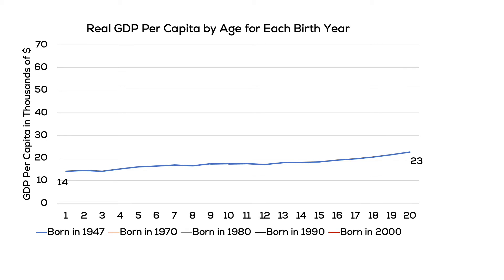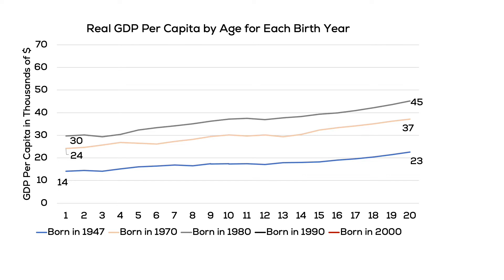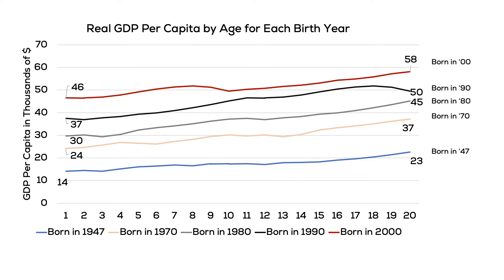Real GDP per capita increased to $23,000 by the time they turned 20. The 1970 generation started at $24,000 and ended at $37,000. The 1980 and 1990 generations had higher living standards across their first 20 years of life than the generations before them. Those born in 2000 started their life with real GDP per capita of $46,000 and today are experiencing a real GDP per capita of $58,000.